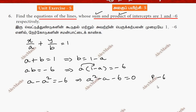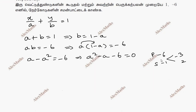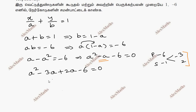We split the middle term. The product is minus 6 and the sum is minus 1, so we use 3 and minus 2, giving: a squared minus 3a plus 2a minus 6 equal to 0.